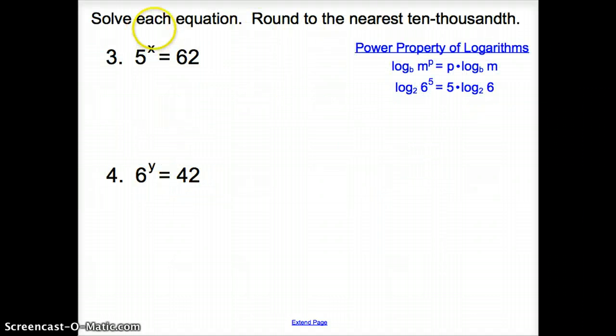Moving on now we're going to be asked to solve each equation and we are going to use our logs. Now if we remember back to our power property of logs where the log of a base and see how this p went in front, we can use that to help us solve number three. So we have this x in an exponent so I'm going to take the log of both sides, the log of 5 to the x equals log of 62.